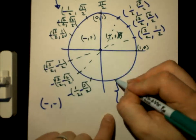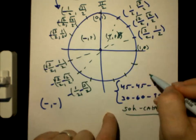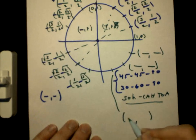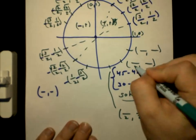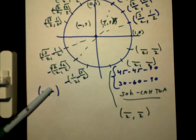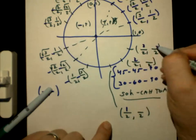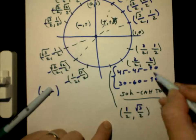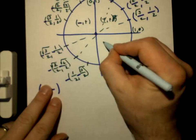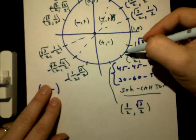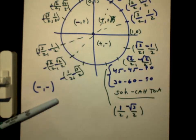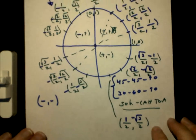For the fourth quadrant, the last one, we go 1, 2, 3 again — taking square roots, divided by 2. In this quadrant, x is positive and y is negative. So the y-values are the ones that get the negative sign. That completes all four quadrants of the unit circle.